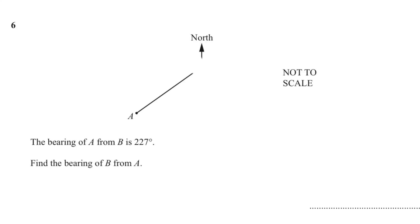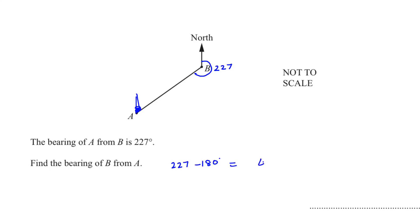Question number six: the bearing of A from B is 227 degrees. Find the bearing of B from A. We need to find the inside angle. If you have a reflex angle and want to find the other bearing, subtract 180 from the reflex angle — that gives us 47. But because it is a bearing we write it in three figures: 047.